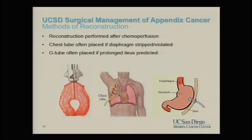After 90 minutes, we wash out the chemotherapy with an additional 2 liters of fluid, then reopen the abdomen for any reconstruction — bowel reconnection or anastomosis. We may leave a chest tube if diaphragmatic disease was addressed, and often leave a G-tube because patients frequently have prolonged ileus or bowel paralysis after surgery, allowing temporary stomach drainage.